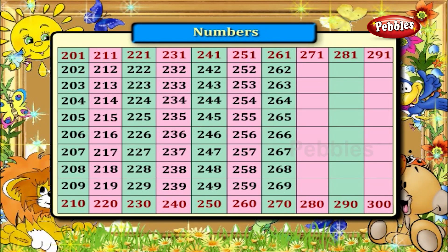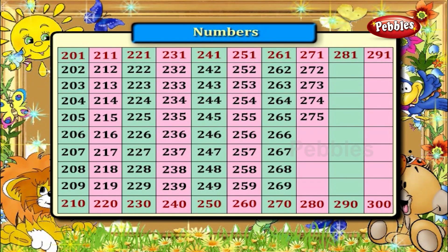Numbers between 271 and 280. They are 272, 273, 274, 275, 276, 277, 278 and 279.